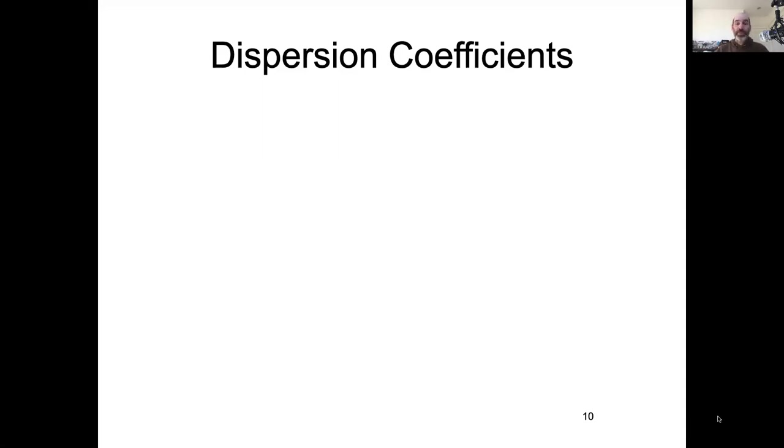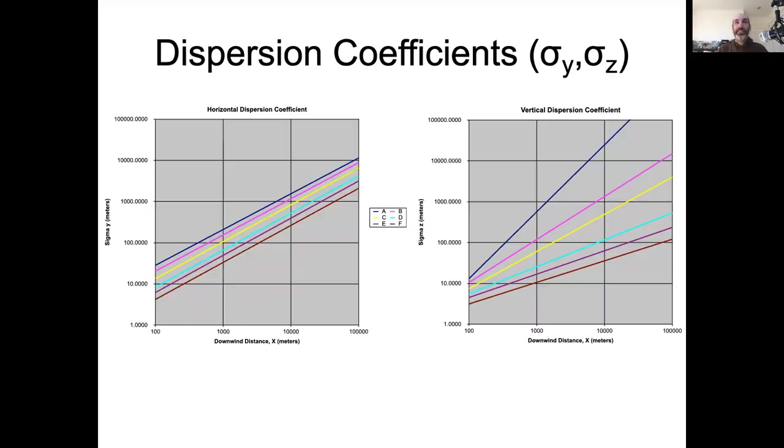Welcome back. This is our third Gaussian plume video and in this one we're going to go over where the dispersion coefficients in the Gaussian plume model come from. Those are the ones that describe essentially standard deviations in the y direction and standard deviations in the z direction, and they are a function of your downwind direction x.